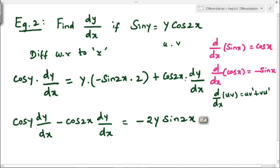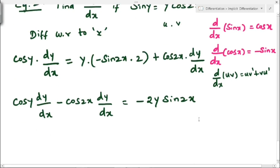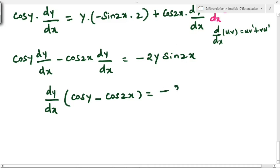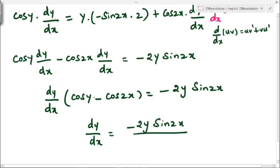Taking cos(2y)·(dy/dx) to the other side: cos(y)·(dy/dx) − cos(2y)·(dy/dx) = −2y·sin(2y). Factoring out dy/dx: dy/dx·(cos(y) − cos(2y)) = −2y·sin(2y). Therefore, dy/dx = −2y·sin(2y) / (cos(y) − cos(2y)).